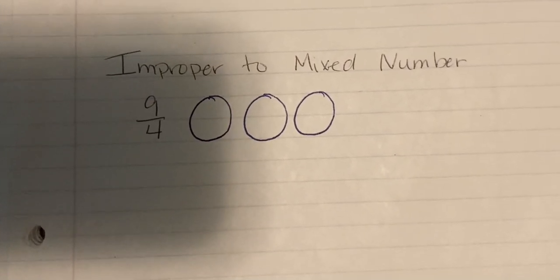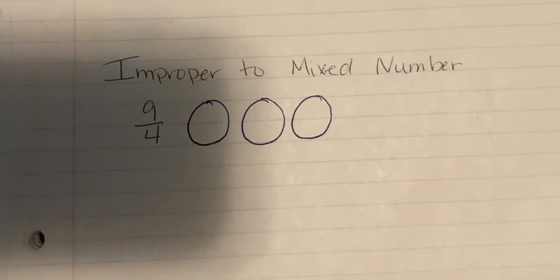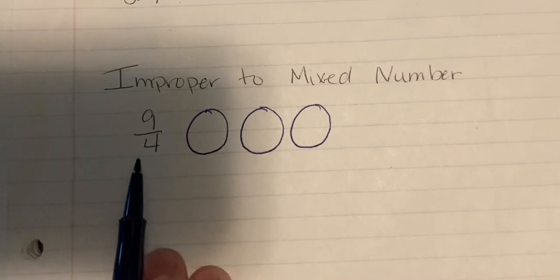So let's talk about improper fractions to mixed numbers. This can be really confusing for students. The easiest thing I can talk about is we've talked about how many pieces you color over how many pieces the circle is cut into.